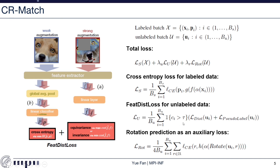This is an indicator function, where ci is the confidence score from the model's prediction. Only if the model's prediction is confident enough — higher than a predefined threshold tau — do we consider the loss from that image. This mechanism is also inspired by FixMatch. Lastly, we have a rotation prediction loss as an auxiliary task, where the input image is randomly rotated by 90, 180, and 270 degrees, and the model is asked to predict the rotation degree applied to the input image.